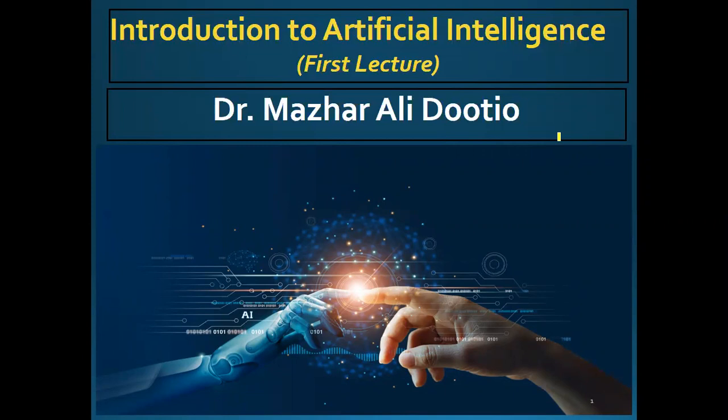Therefore, AI or Artificial Intelligence aims to improve computer functions related to human knowledge — for example, reasoning, learning, and problem solving. We may also say that artificial intelligence is a group of related technologies that attempt to develop machines to emulate human-like qualities such as learning, reasoning, communicating, seeing, and hearing.